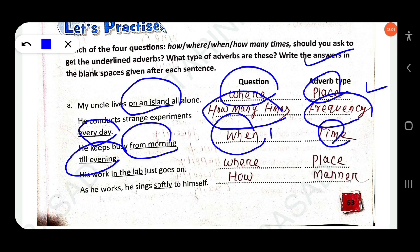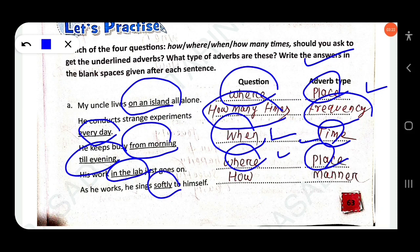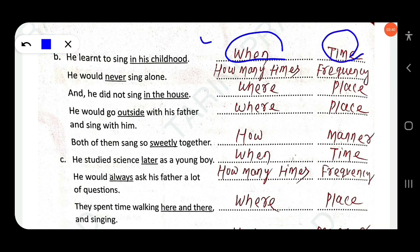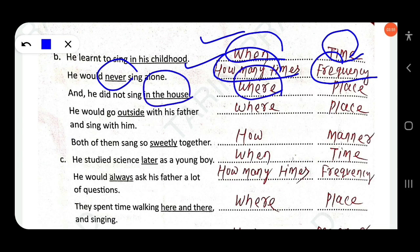'His work in the lab just goes on' — 'in the lab' is adverb of place (where). 'As he works, he sings softly to himself' — 'softly' is adverb of manner (how). 'He learned to sing in his childhood' — 'in his childhood' is adverb of time (when). 'He would never sing alone' — 'never' is adverb of frequency (how often). 'He didn't sing in the house' — 'in the house' is adverb of place.